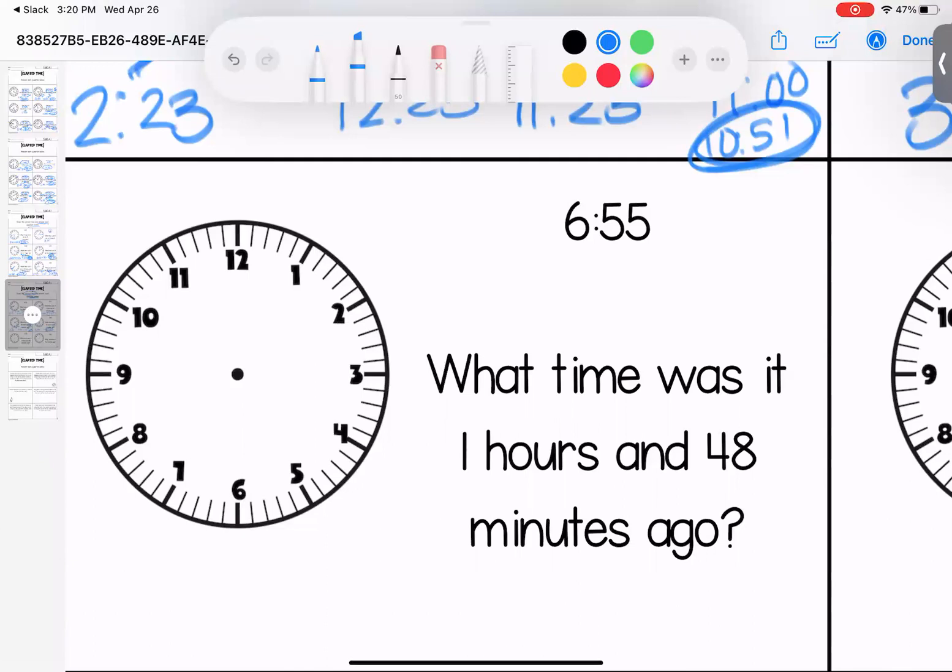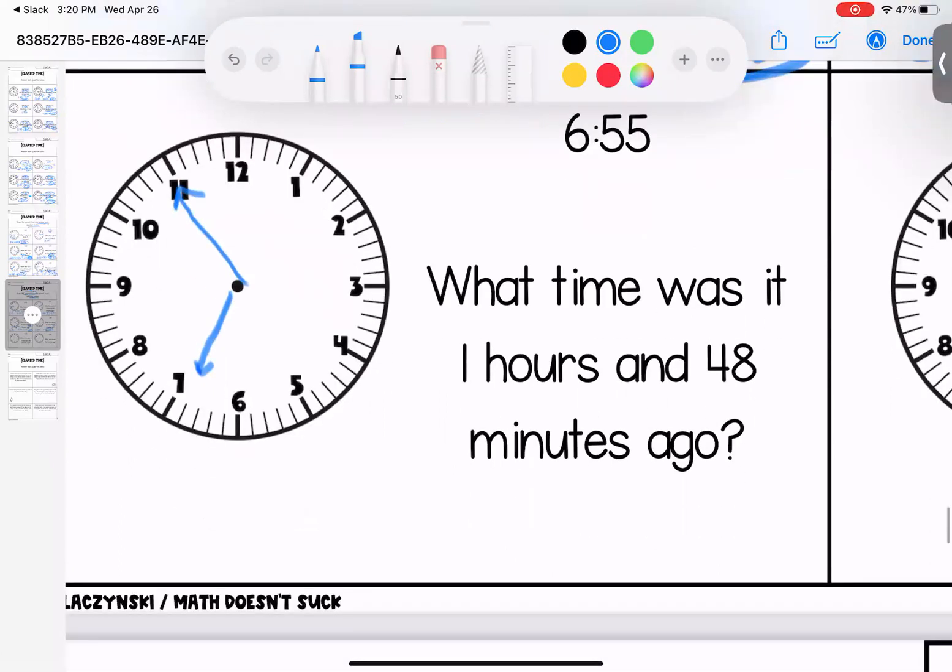It's 6:55, which means that hour hand is going to be really close to seven but not quite there. What time was one hour and 48 minutes ago? One hour is 5:55. Taking off 48 minutes, 55 minus 48 leaves me with seven, so it would be 5:07.